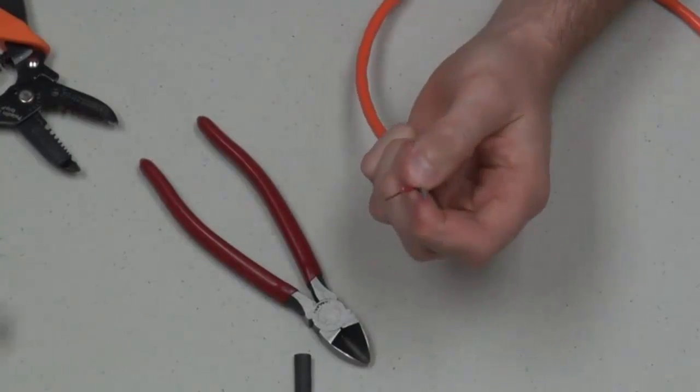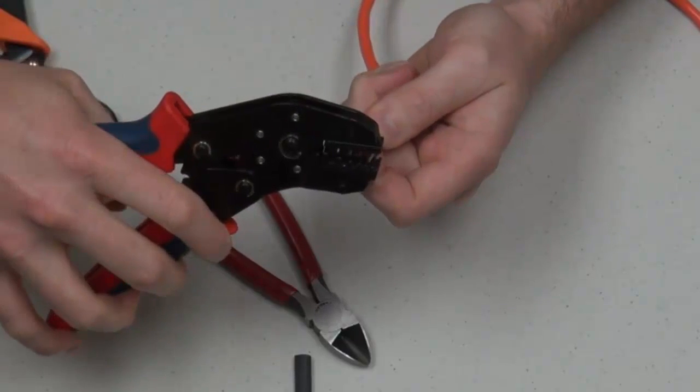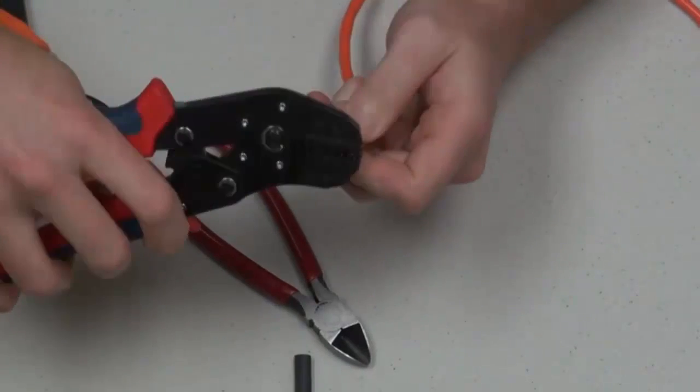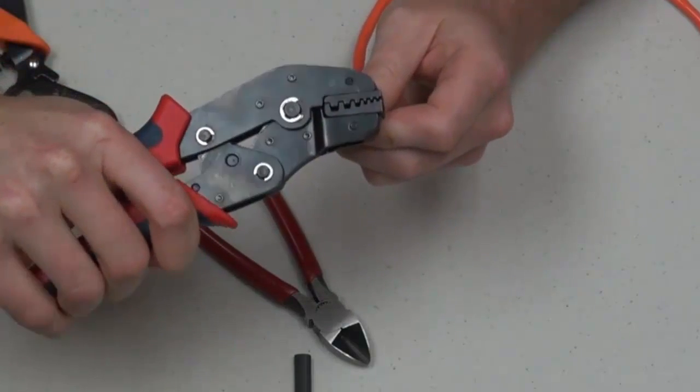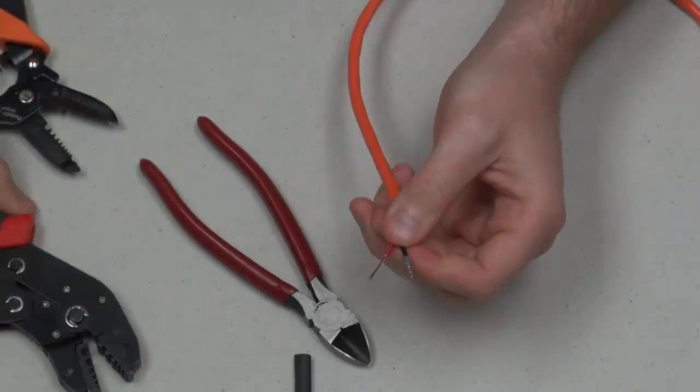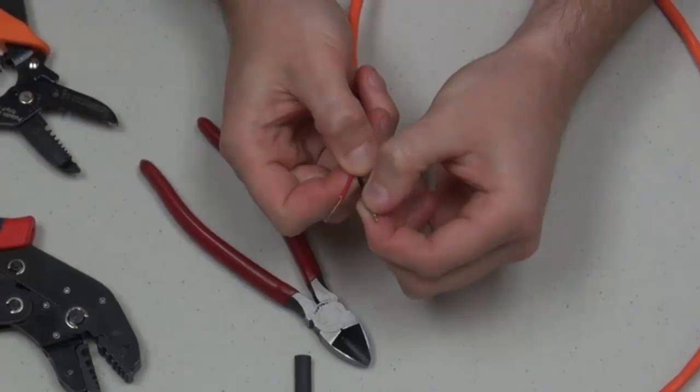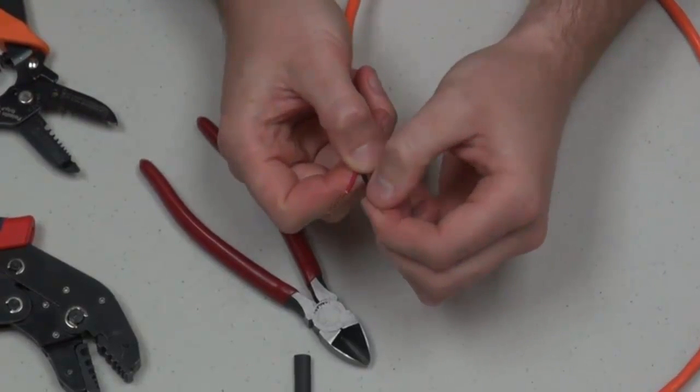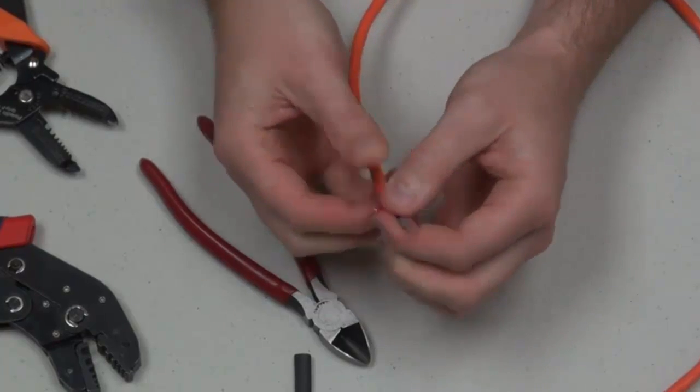The next step would be to take your trusty crimpers here. Put the ferrule inside the crimper of the appropriate size. Click down. You hear that click. It means it has notched nicely. And I like to also give it a nice tug. Pull on that. It shouldn't slide off. If it does slide off, you want to redo it and make sure you've got the right size and everything.